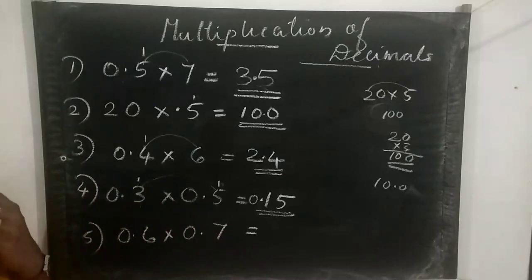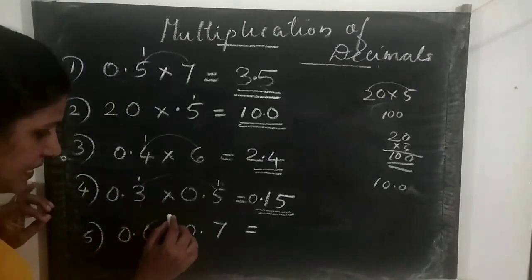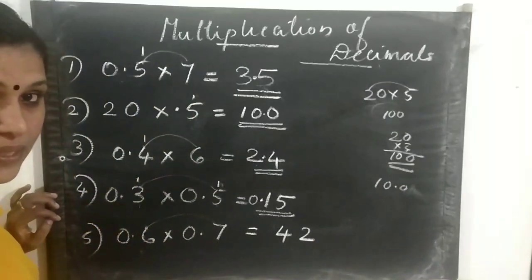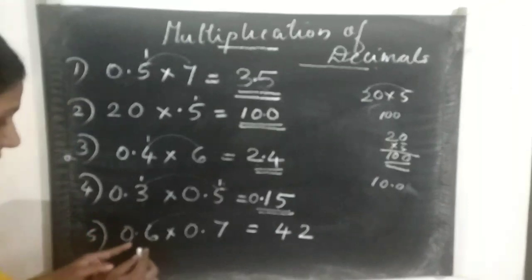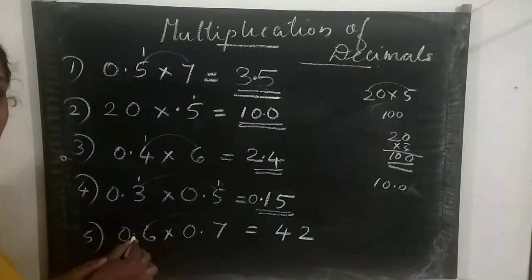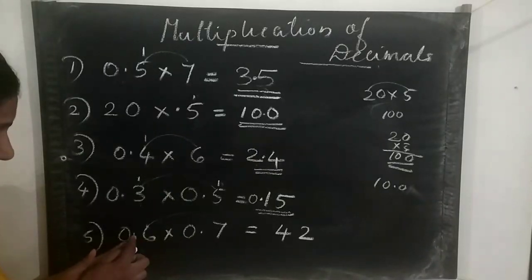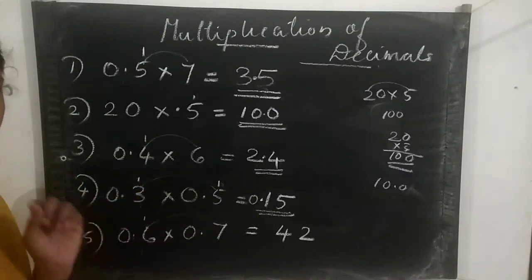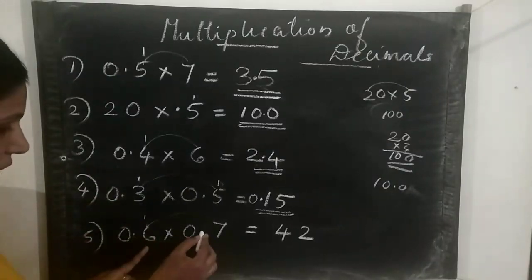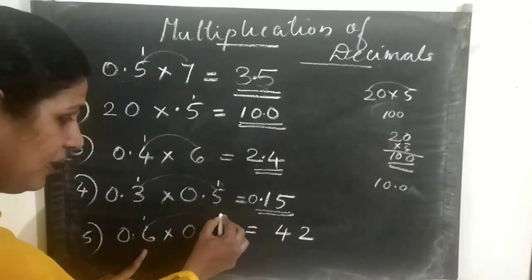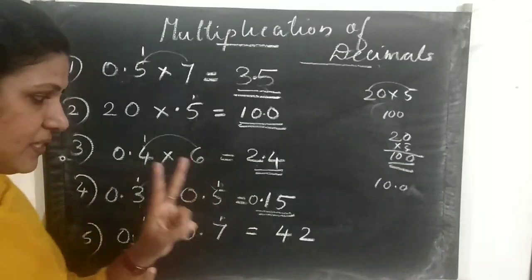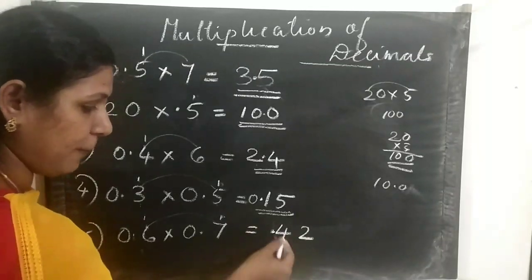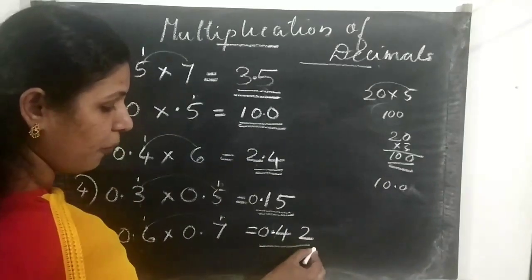Next is 0.6 into 0.7. First we multiply: 6 into 7 is 42, so we write 42. Then count the places — after the decimal in 0.6 there is 1 place, and in 0.7 there is also 1 place. Total: 1 plus 1 equals 2. We count 2 places from right to left and put the point. We put a 0 in front. The answer is 0.42.